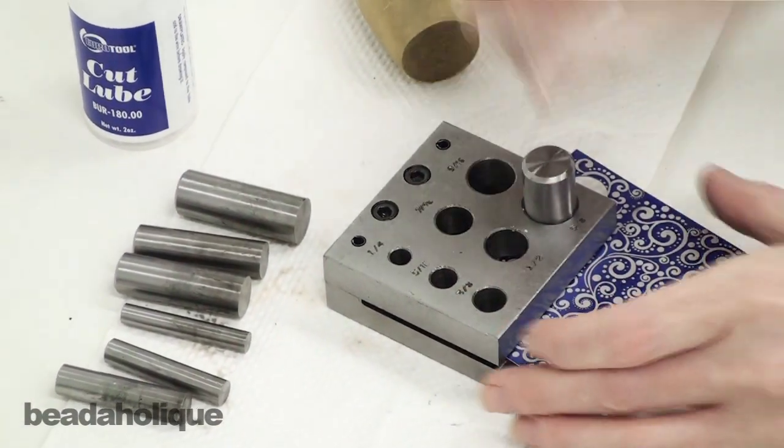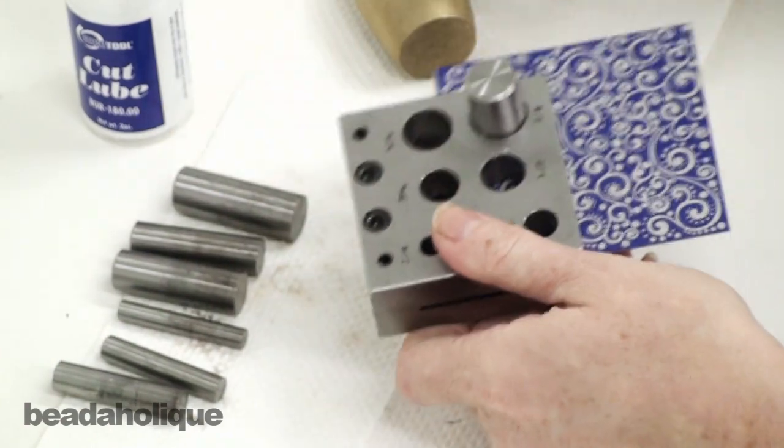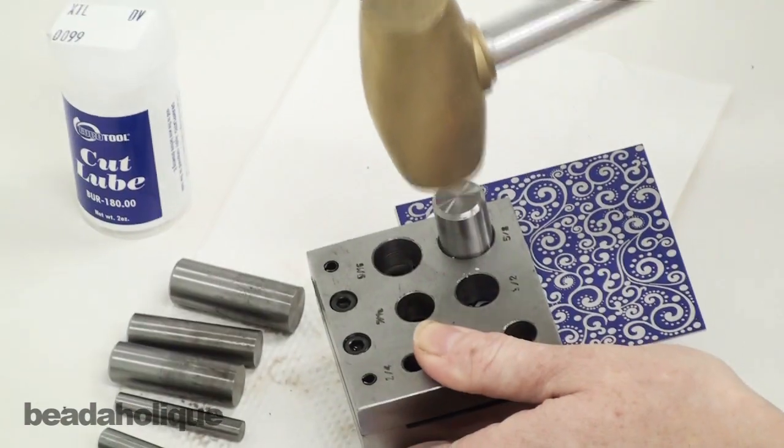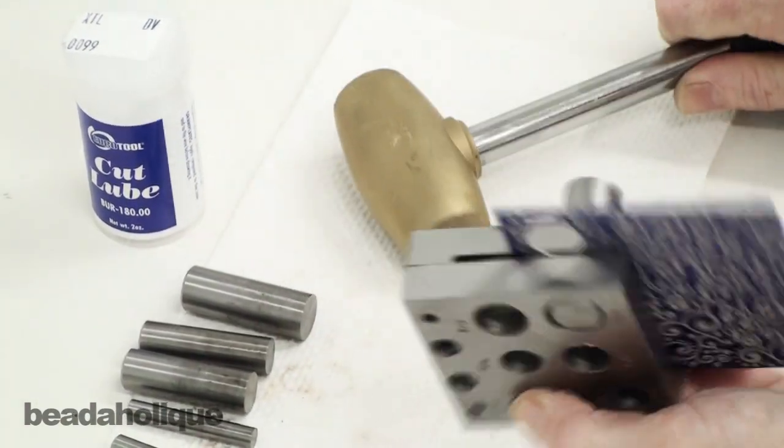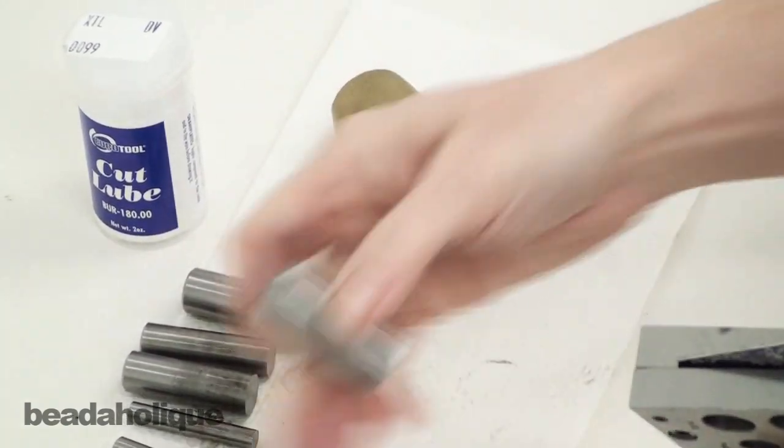Now if you're having a hard time retrieving the cutter after you've hammered it, what I find works well is to carefully give it another tap, let it come through the bottom and sometimes it's a lot easier to remove that way.